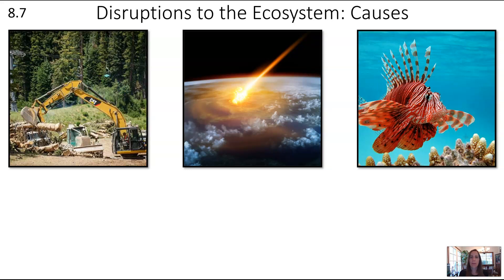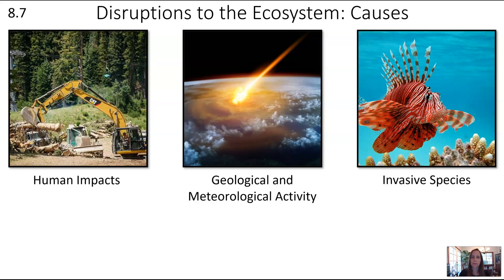There are three major categories of disruptions to an ecosystem: human impacts, geological and meteorological activity, and invasive species. It's important to note that invasive species can occur naturally, but humans also have a large impact — humans often introduce species to new ecological areas.